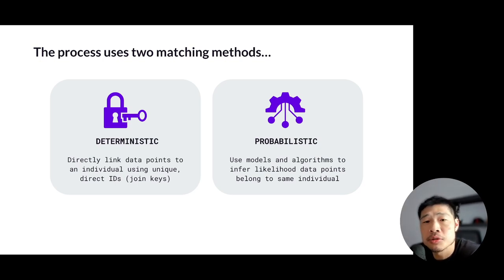In contrast, probabilistic matching uses statistical algorithms to infer the likelihood that different data points belong to the same individual based on patterns, behaviors, and non-unique identifiers. This could be IP addresses, though that's probably going to go away in the near future, device types, browsers, and even the settings on the device.